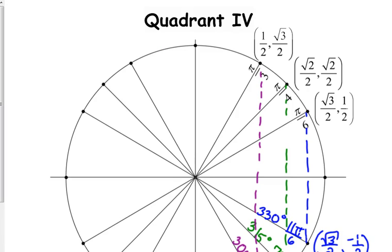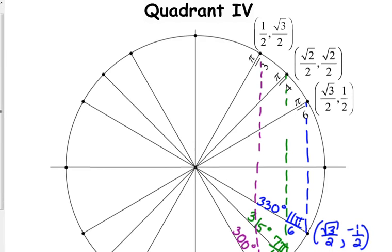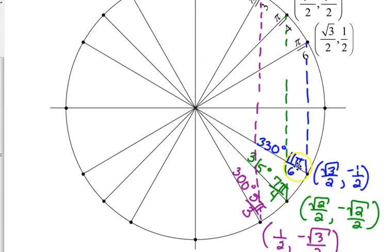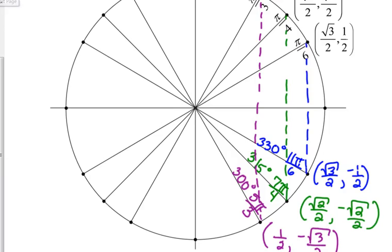Now, if it asks for the sine of negative 11 pi over 6, find positive 11 pi over 6, and it's below the x-axis, so then you go above it. You just go the opposite way. Up or down if it's a negative angle.